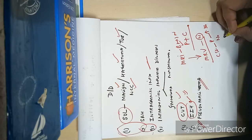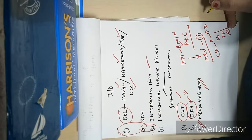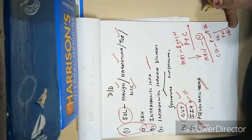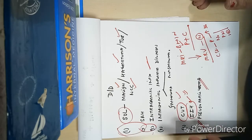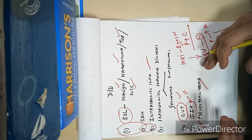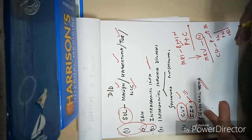CSF was done. CSF pressure was raised - it was 360 millimeters of water. There was no cells. Protein was normal and sugar was normal, which ruled out any inflammatory process. This was a non-inflammatory CSF. This also favors our diagnosis of IIH.